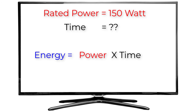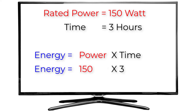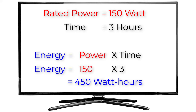If we turn on this TV for 3 hours, the power of this TV still equals 150 Watt, and the energy will equal 150 Watt times 3 hours, which equals 450 Watt-hour. This is the consumed energy, and you will pay your electricity bills for how much total energy you consumed, not for power.